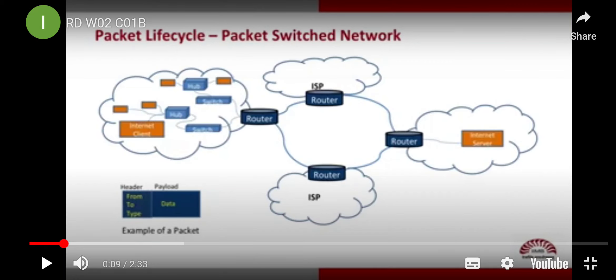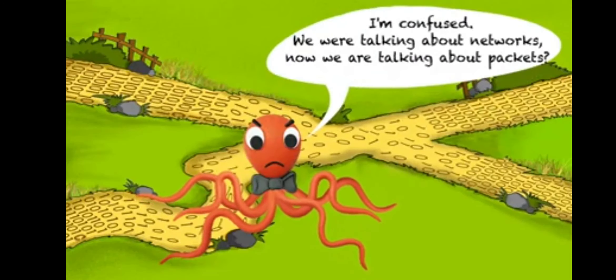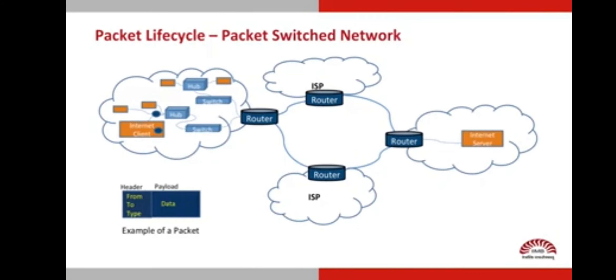Each network packet consists of an address and the content it is carrying. Packets are actually data with address information. What flows on networks are packets, and each message on a network is a collection of packets. Think of an email you are sending — it is broken up into packets. Each packet contains parts of the email message and also the address to which it is being sent. Packets are created for each type of message on the internet with content and address information.